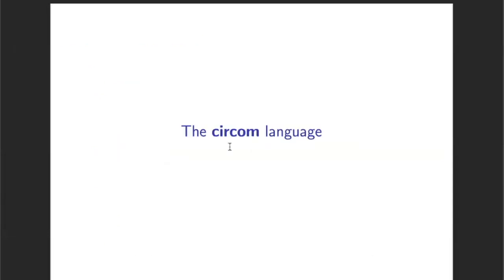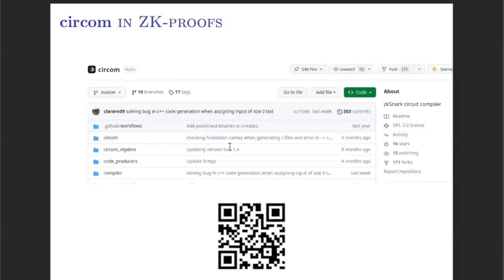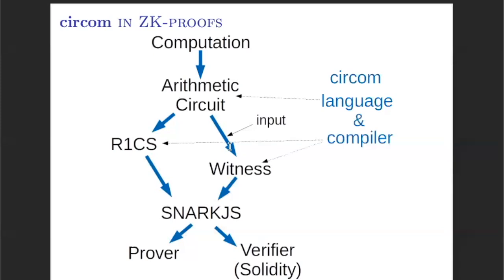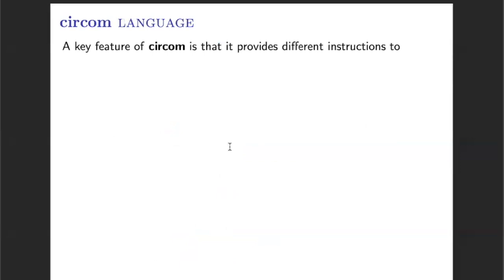In our work, we focus on circuits written using the CIRCOM language. CIRCOM is one of the most used languages for modeling circuits in order to be used in Zero Knowledge protocols. Here you have the link of the GitHub repository, so you can try it if you're interested. CIRCOM appears in the process of generating a Zero Knowledge proof first as a language for modeling arithmetic circuits, and secondly as a compiler that generates both a symbolic representation of the circuit given in terms of the constraint system, and also an executable file that simulates the behavior of the circuit and can be used to generate a witness.